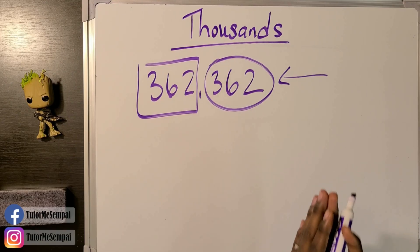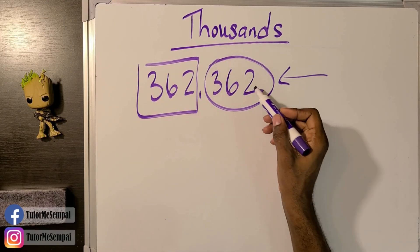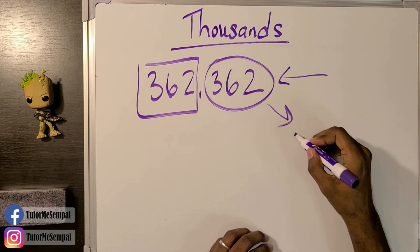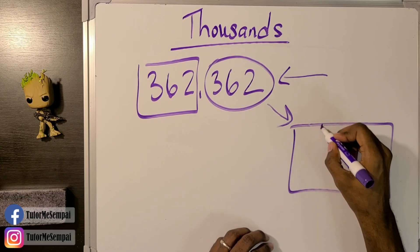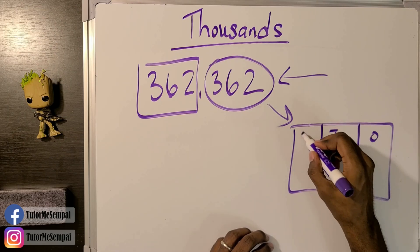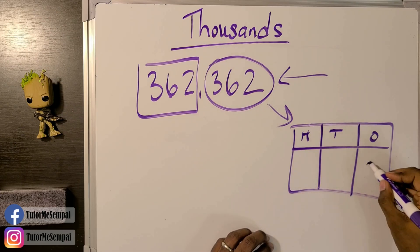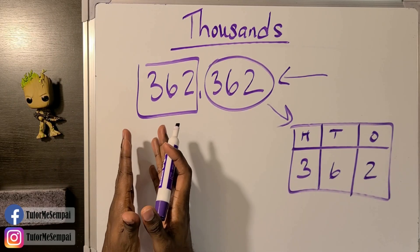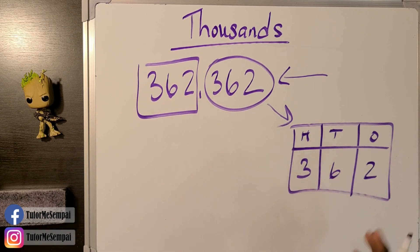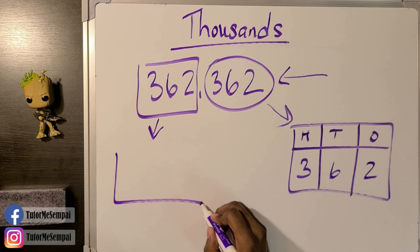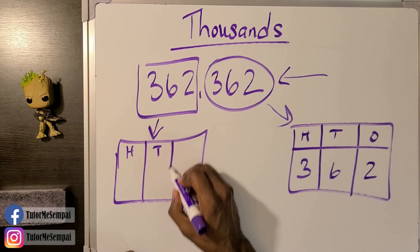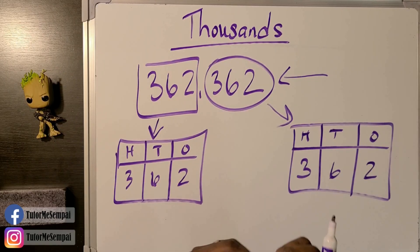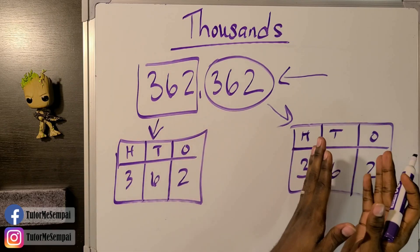Each group after the comma tells us how many ones, tens, and hundreds we have — just like before. So we'd fill in a place value chart with ones, tens, and hundreds: 2, 6, and 3. The group before the comma works exactly the same way: hundreds, tens, ones — filled in as 3, 6, 2.